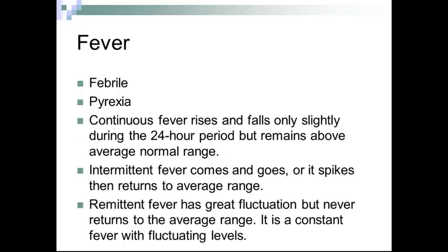Fever: febrile and pyrexia are terms for fever. Continuous fever rises and falls only slightly during the 24-hour period but remains above the normal range. Intermittent fever comes and goes — it spikes then returns to the average range. Remittent fever has great fluctuation but never returns to the average range; it is a constant fever with fluctuating levels.